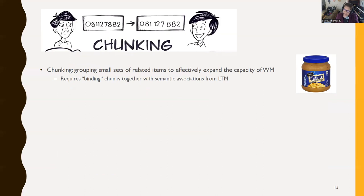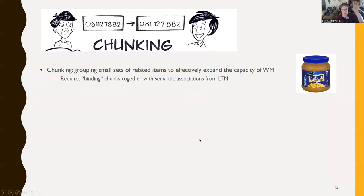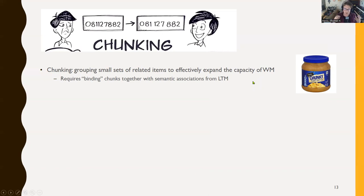Seven plus or minus two items sounds artificially small, but I'm leaving out what makes a 'thing.' There's a process by which we take several related ideas, bind them together with some logic, and that becomes one thing — one chunk — rather than several. Take small sets of related items and instead of remembering each one, remember the set. Now you've freed up capacity for other things or other sets. This requires going to long-term memory to find meaningful groupings that help bind stimuli without much extra effort.